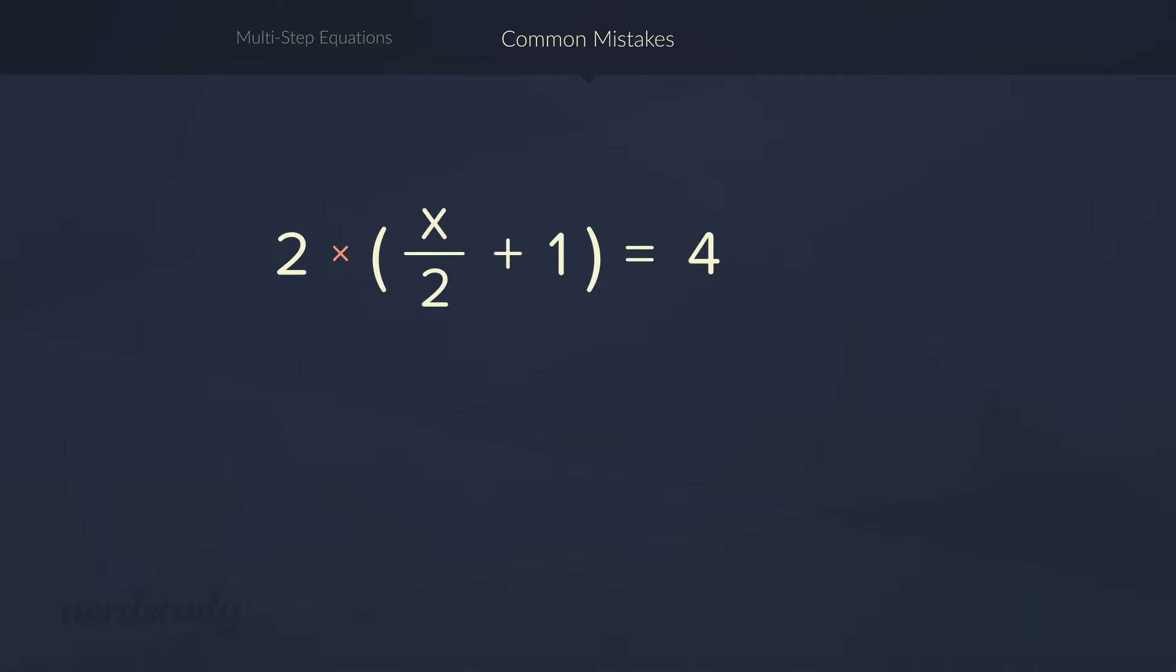Hmm, now what do we do? Aha, we know how to simplify this side. We use the distributive property. We literally distribute the multiplication of 2 onto all terms inside the brackets. So 2 times x over 2 is just going to be x, and 2 times 1 is just going to be 2. And of course, on the right side, we have 4.